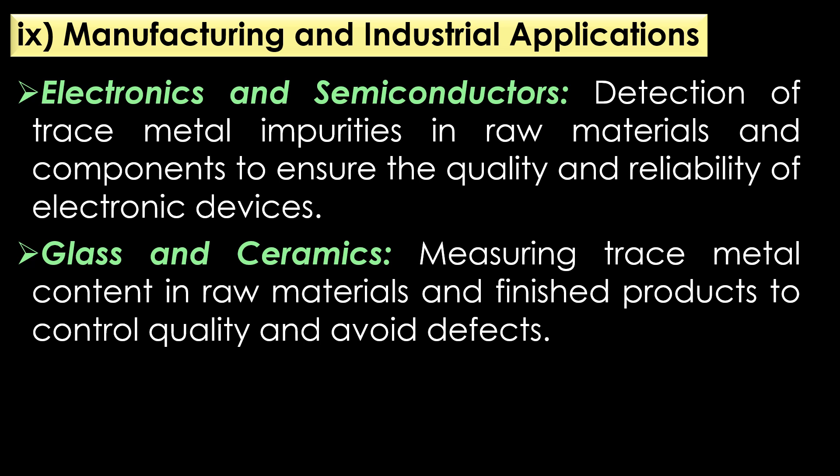Applications of atomic absorption spectroscopy in manufacturing and industrial applications: In electronics and semiconductors, AAS is used for the detection of trace metal impurities in raw materials and components to ensure the quality and reliability of electronic devices. In glass and ceramics, AAS is helpful in measuring the trace metal content in raw materials and finished products to control quality and avoid defects.